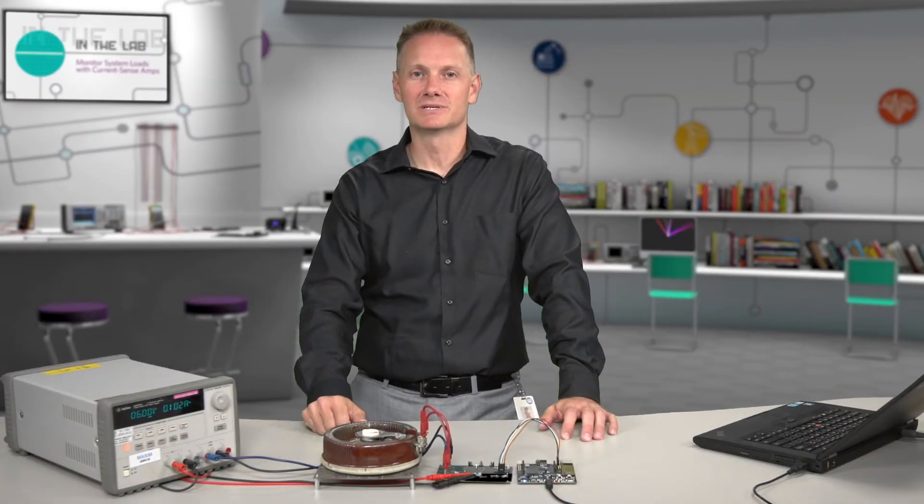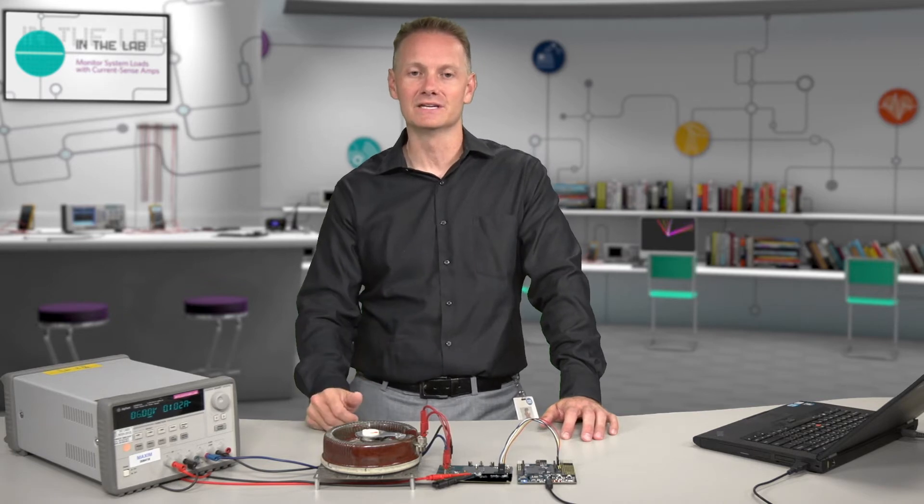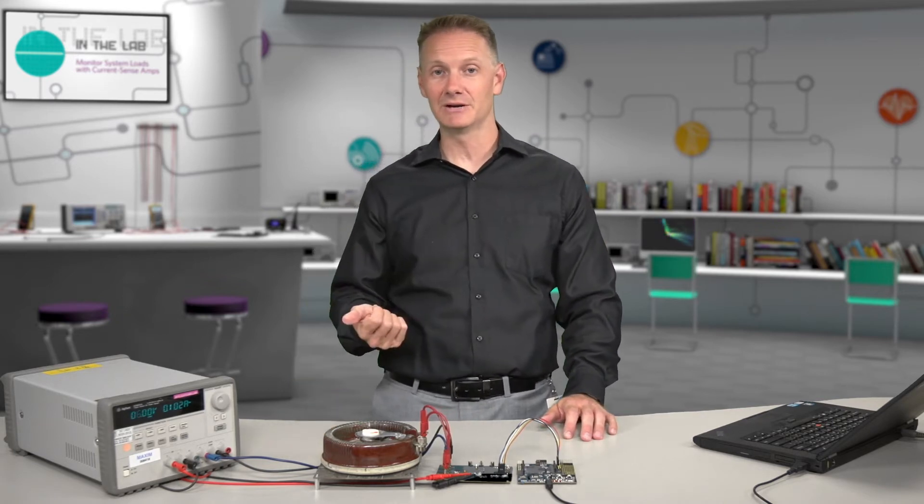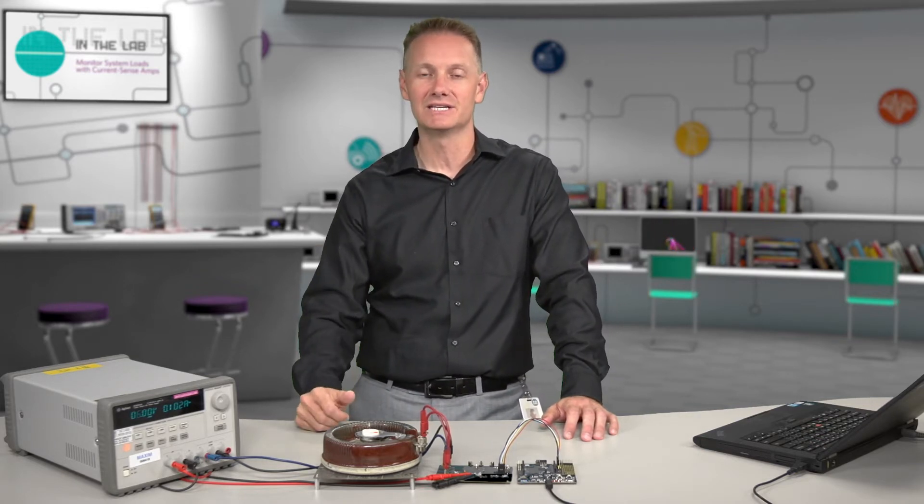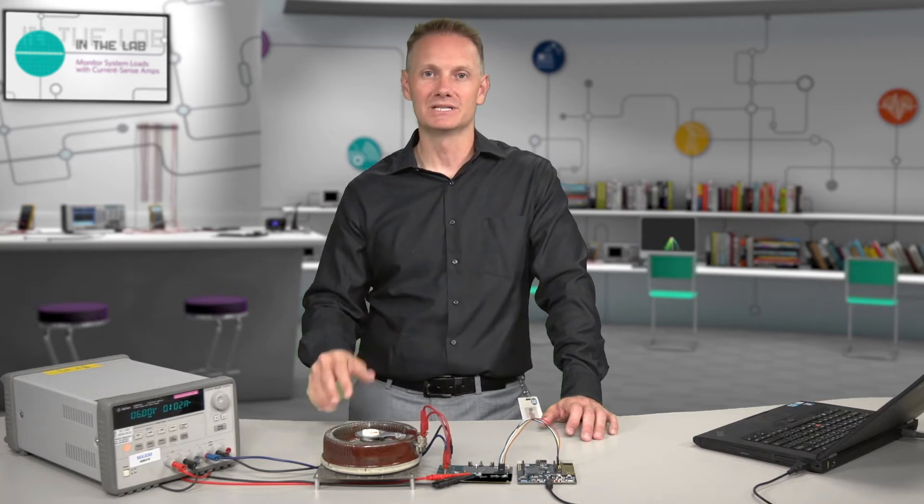So the measured current feeding into a CurrentSense amp can come from a variety of different things. You can be looking at the battery draw in a portable product. It can be feeding something like a payload going to a big digital chip like an FPGA or an ASIC or something like a power transistor in a communications radio.